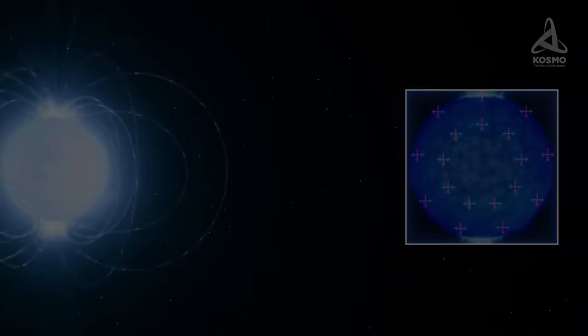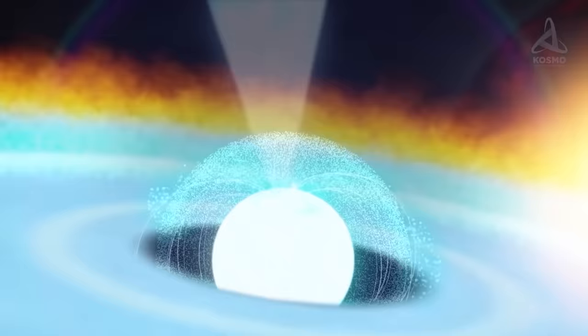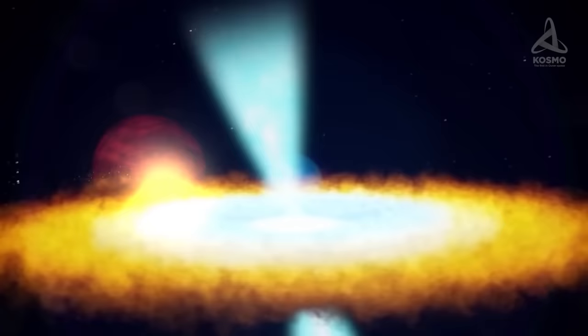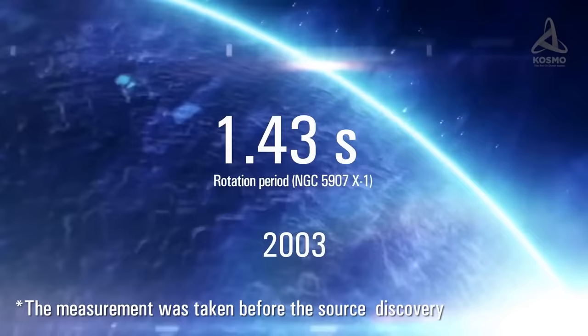Earlier, astrophysicists believed these ultra-bright X-ray sources to be black holes. However, after the discovery of NGSC 5907X1, it became known that they may turn out to be pulsars too. The object is located approximately 50 million light-years away from our Sun. As for its spin rate, it is variable. For example, in 2003, the rotation period of the pulsar was 1.43 seconds, whereas in 2014 it dropped to 1.13 seconds.